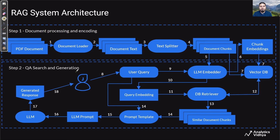Now let's get into the second step, which is Q&A search and generation. This starts with a user who asks a query and sends it to our application. Once the query is sent, we need to find out which document chunks are relevant to answer the question. The first step is to take this user query and pass it through the LLM embedder to convert it into a query embedding — just like every document chunk is converted into an embedding vector. Then we have a vector database retriever on top of our vector DB, and this embedding is sent to the retriever.